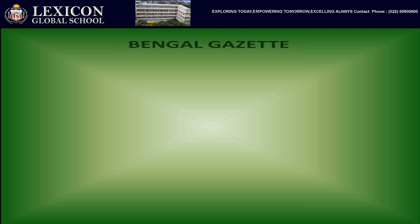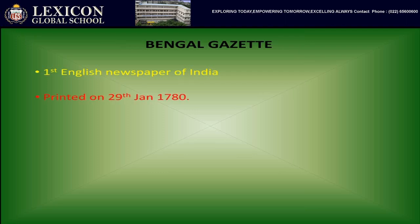We also studied about Bengal Gazette, the first English newspaper of our country, which was printed on 29th of January 1780. It was also called the Calcutta General Advertiser or Bengal Gazette.